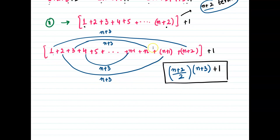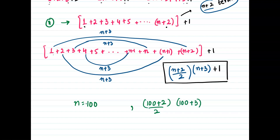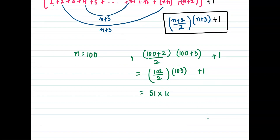Now if we have to figure out how many dots will be there in the hundredth figure, we simply put n equal to 100. We get (100 plus 2) divided by 2, times (100 plus 3), plus 1. That is 102 divided by 2, times 103, plus 1 — which is 51 times 103, plus 1 — which is 5253 plus 1, equal to 5254. So like this we can figure out the number of dots in any figure. I hope it is clear. Thanks for watching, goodbye.